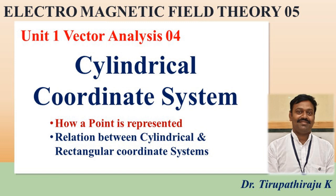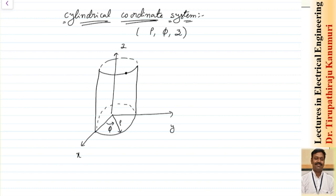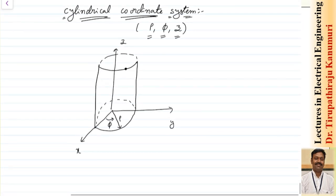Today we are going to discuss the cylindrical coordinate system. The coordinates used are rho, which indicates the radius; phi, which indicates the angle of the radial vector with respect to the x-axis; and z, which indicates the z-axis. Before going into this, some basics are required so you can visualize the cylindrical coordinate system easily, and directly write equations in the exam without memorizing them.